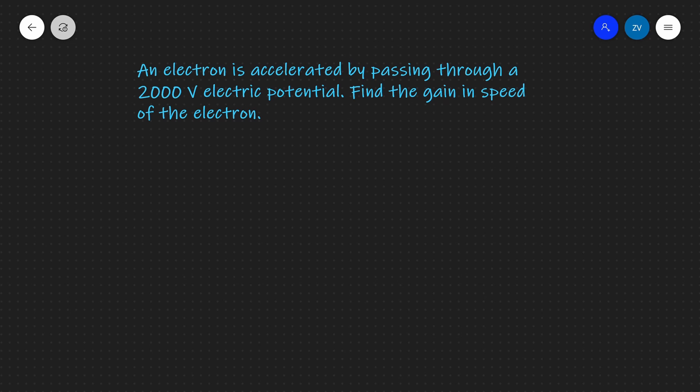Hi everyone! What we're going to be talking about today is accelerating electrons. We have a problem over here which is a very typical exam problem, which is why I'm stressing this type of problem in this video, in which an electron is accelerated by passing through a 2000 volt electric potential. Find the gain in speed of the electron.